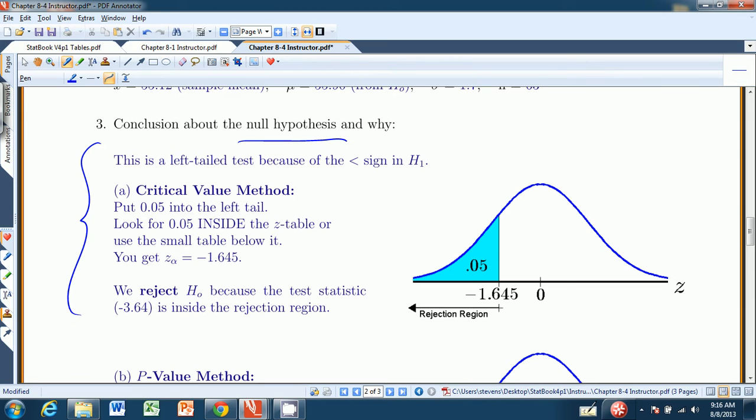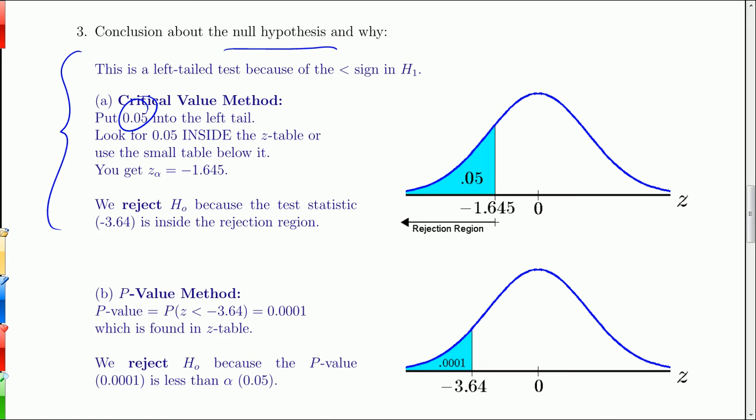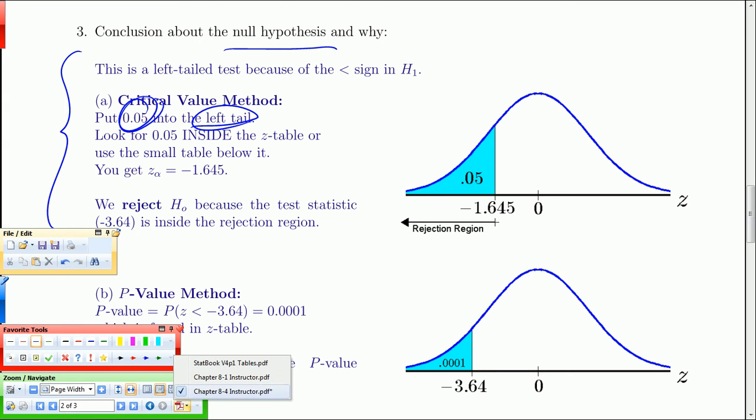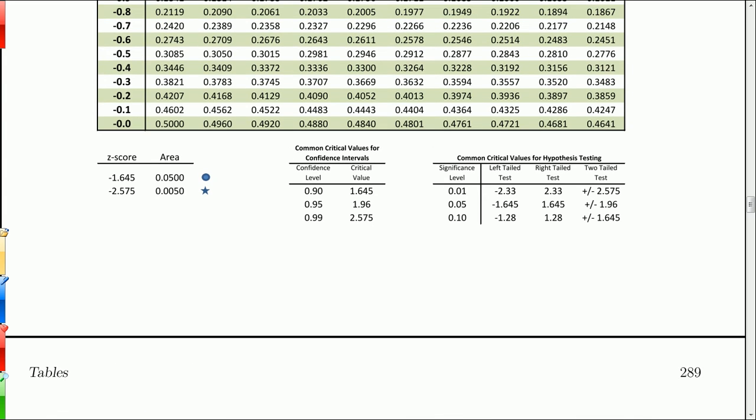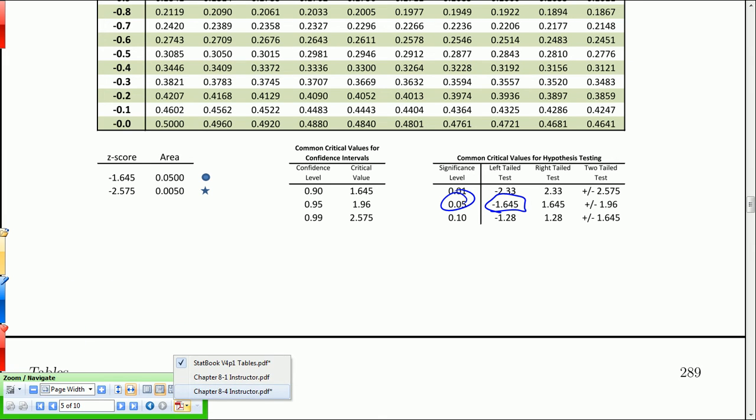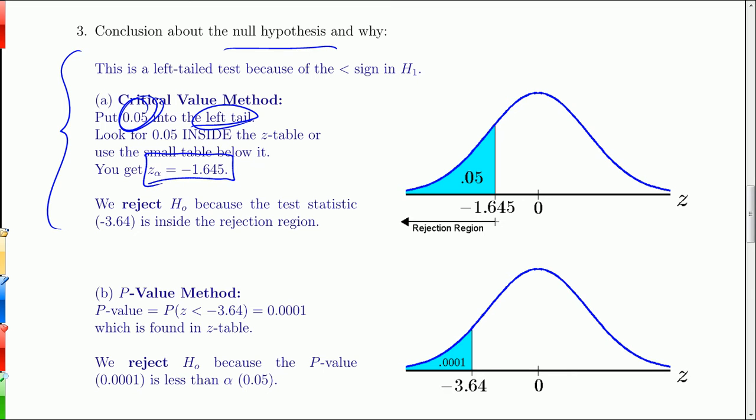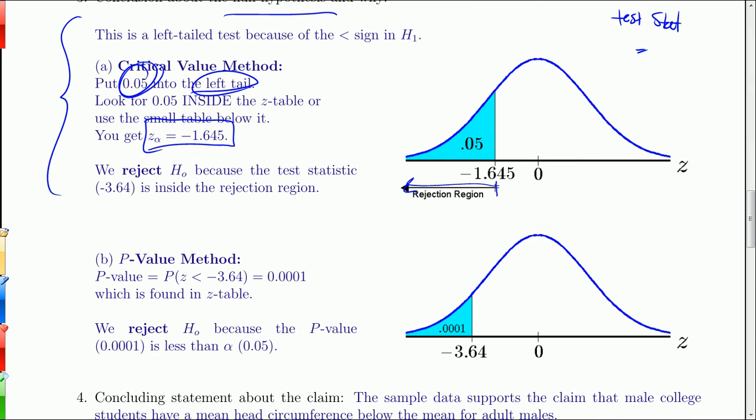First, doing the critical value method, we need to put 0.05 in the left tail, or you can use the small table below it. 0.05 left tail test, negative 1.645 is the critical value. So that determines my rejection region. My test statistic was negative 3-something, it was negative 3.64. So if you look at that, that's way over here. That's in the rejection region, so we reject the null hypothesis.